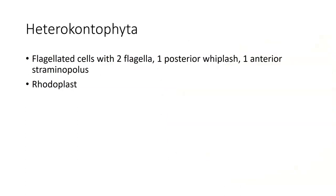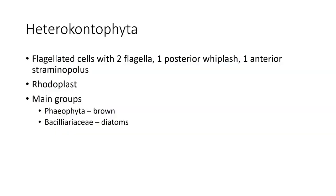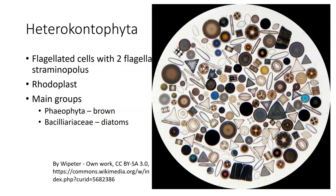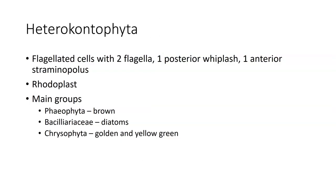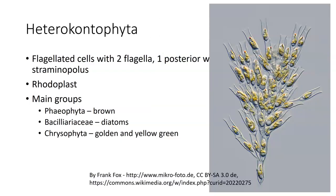The Heterokontophyta have flagellated cells with two flagella: one posterior whiplash and one anterior straminopilous. They also have the rhodoplast. The main groups include the Phaeophyta (the browns), the Bacillariaceae which are the diatoms — which are absolutely gorgeous — and the Chrysophyta, which are the golden and yellow-green algae.